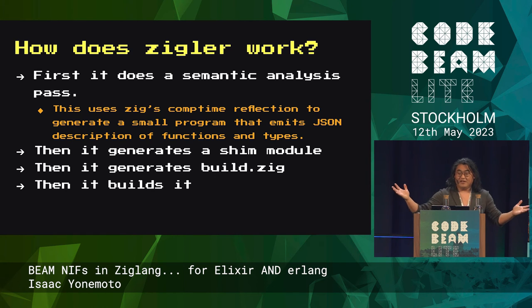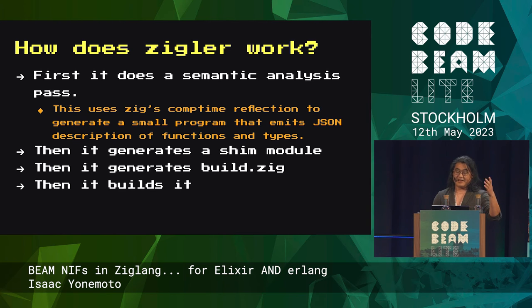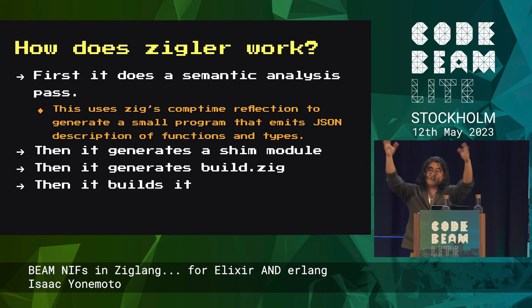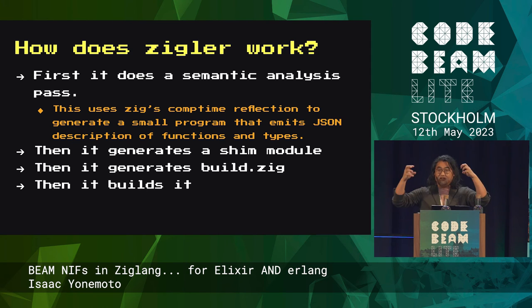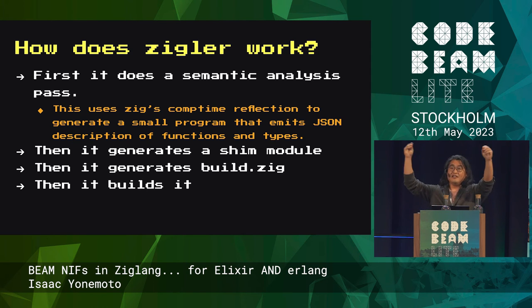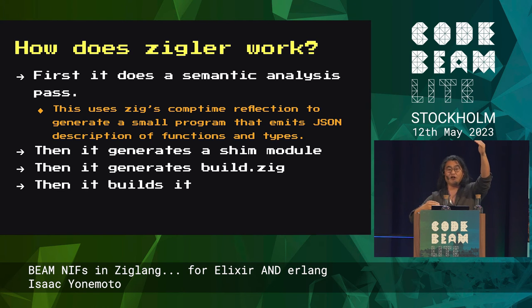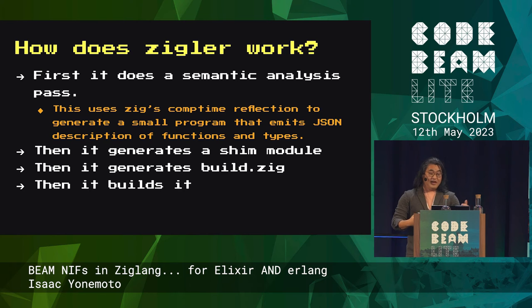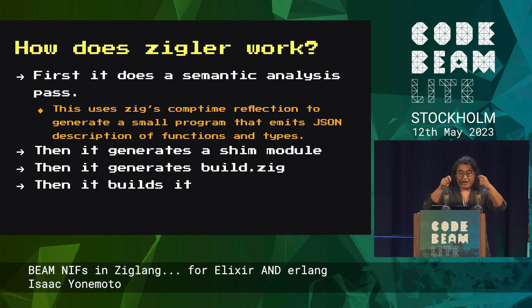How does it do this? Under the hood, first it does a semantic analysis pass. It takes the code you've written and uses Zig's compile-time facilities to generate a JSON file — a manifest of all the types and all the functions that exist inside the code you've written. It then executes a small program and exports that JSON.